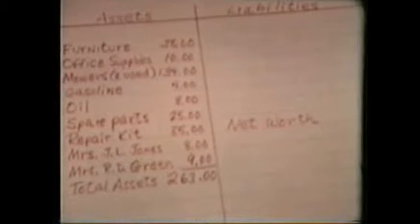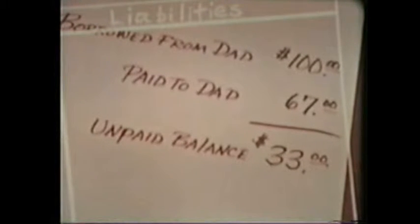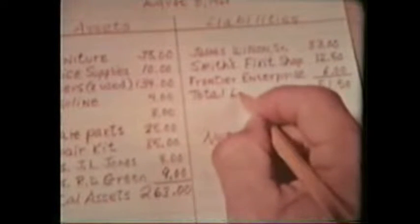Now, what about his liabilities? His liabilities include the $33 he still owes his father, a $12.50 repair bill which he has not yet paid, and, for newspaper advertising, a bill for $6 which he has not yet paid. Jim totals them. $51.50 represents Jim's total liabilities.